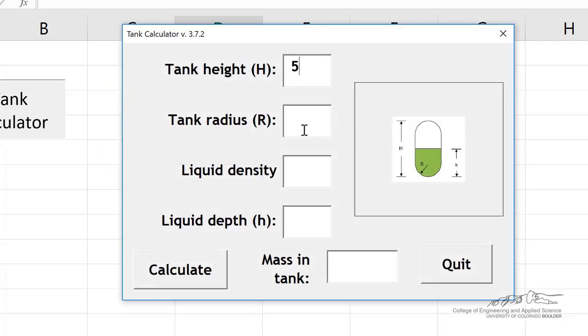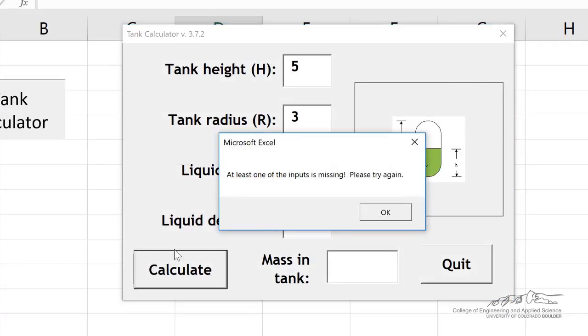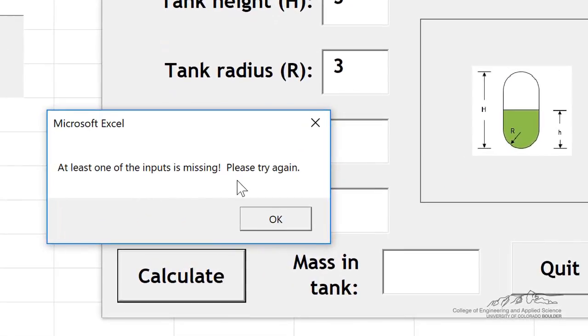So when we try to do this, let's just put some numbers in here. I'm going to leave that blank. Then it says at least one of the inputs is missing.